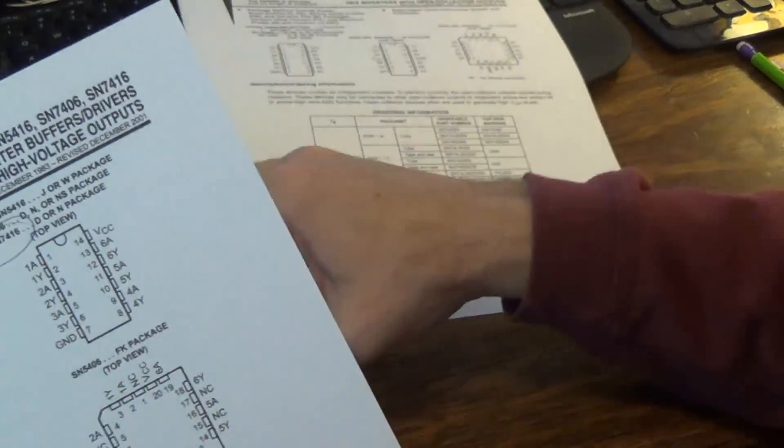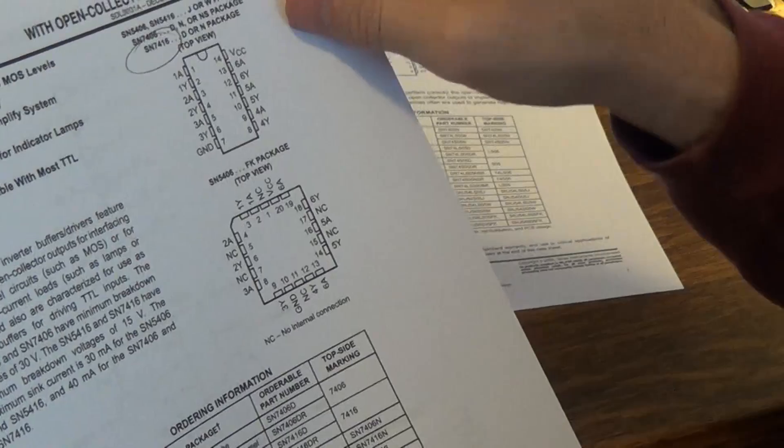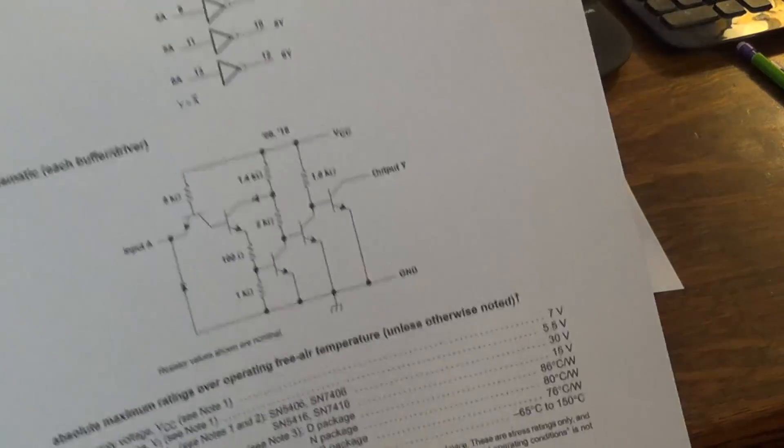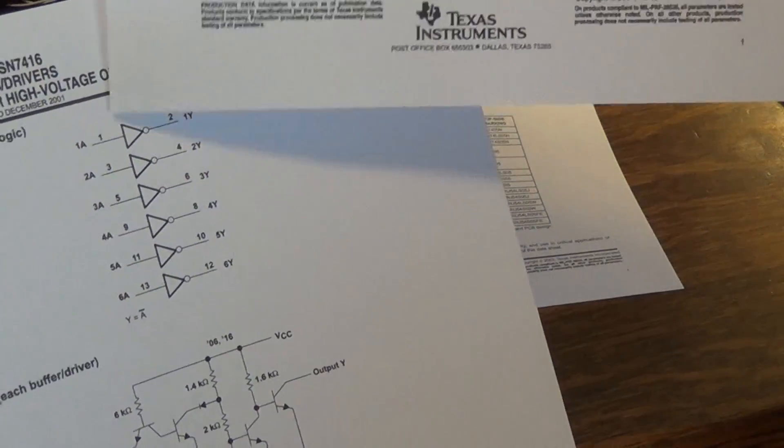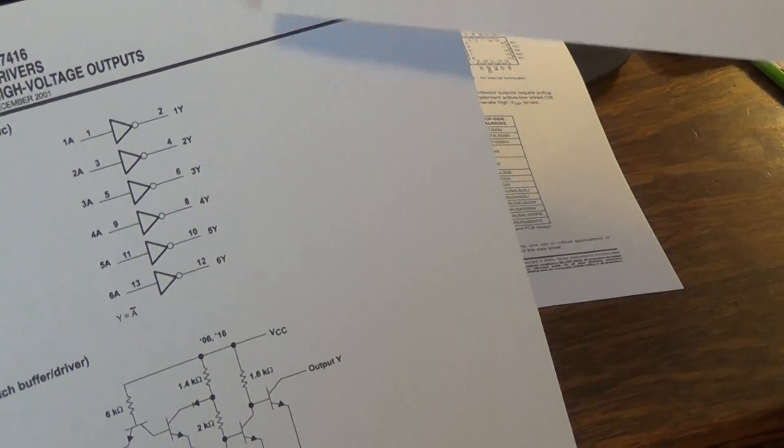So this is the 7416N. And you can see this is basically the chip. And when you actually look at the logic right here, you can see it's just a bunch of hex inverters, if you know what that means. So there's that.